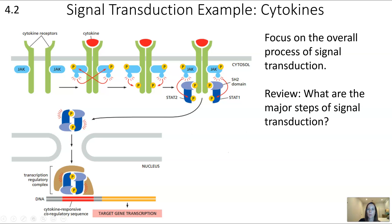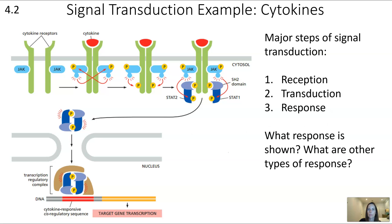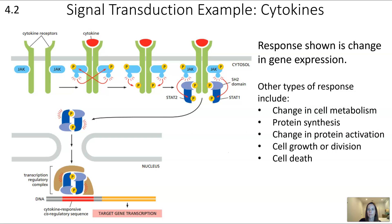Here is a more specific example. The three steps of signal transduction — reception, transduction, and response — are all present. Reception is shown with the cytokine in red binding with the cytokine receptors. The transduction is in the center. The response shown here is a change in gene expression — specifically, target gene transcription — where the cytokines trigger a cascade that ends with a gene being transcribed into mRNA.